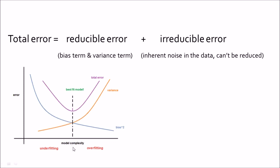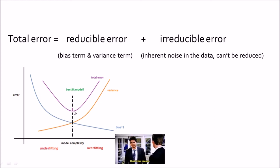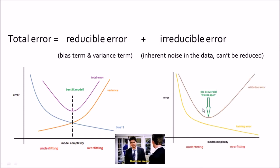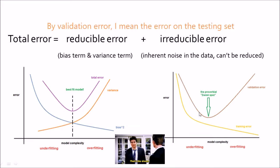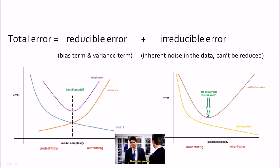So we have to find a middle ground — that is the best fit model. As you keep increasing training samples or model complexity, you keep reducing both training error and validation error up to a point, after which the validation error typically rises again. That point of lowest validation error is your sweet spot — that is where you stop training and get your best fit model.